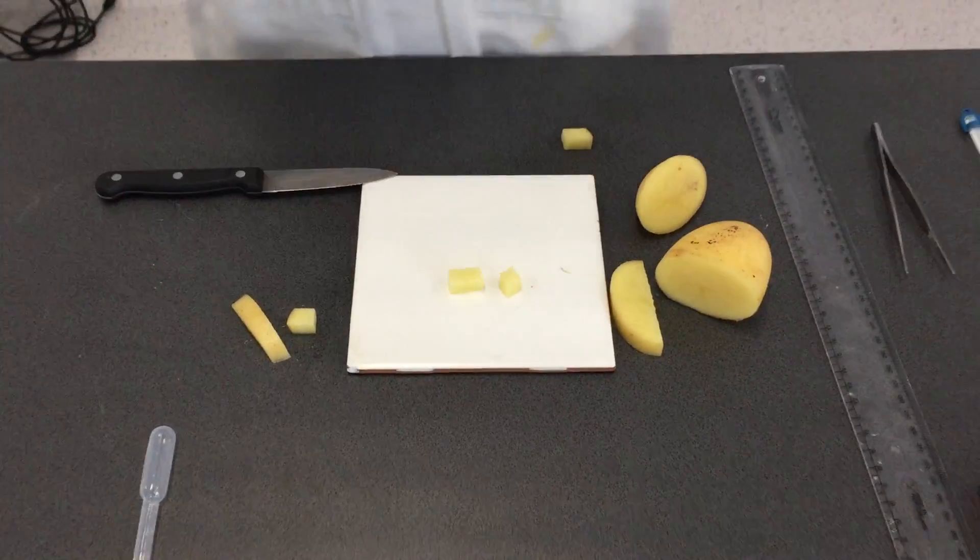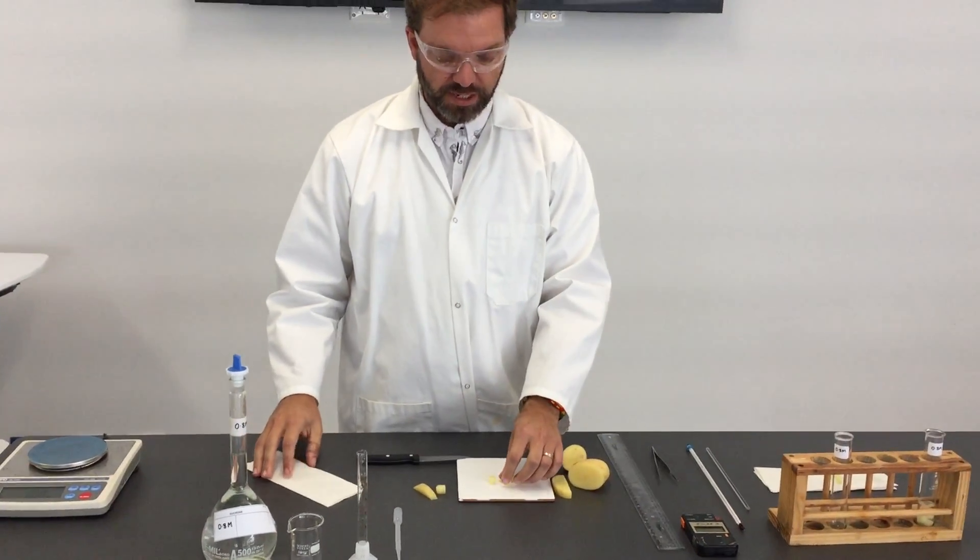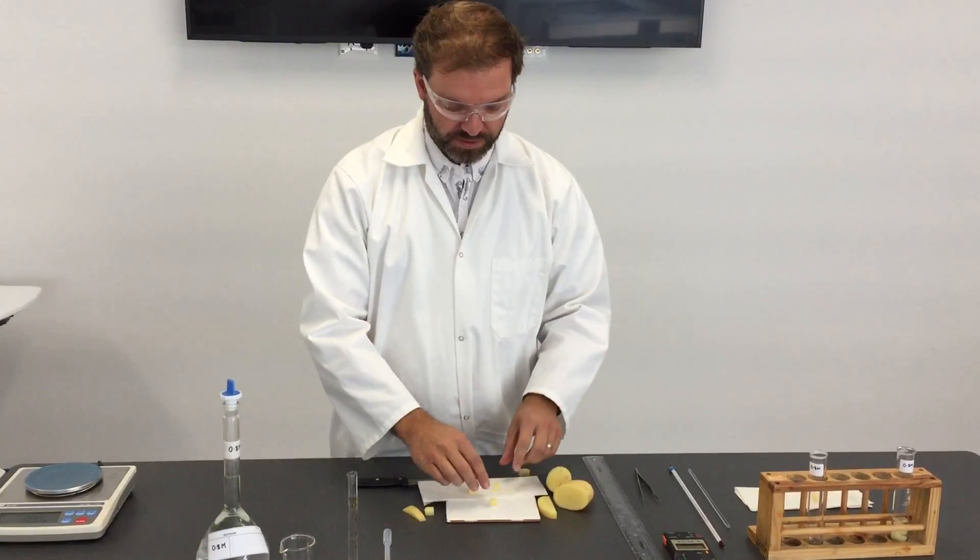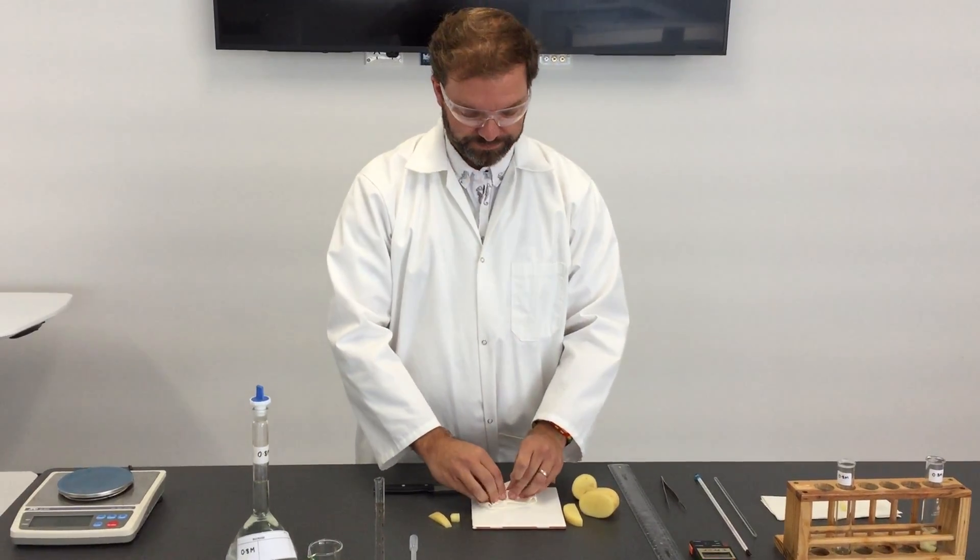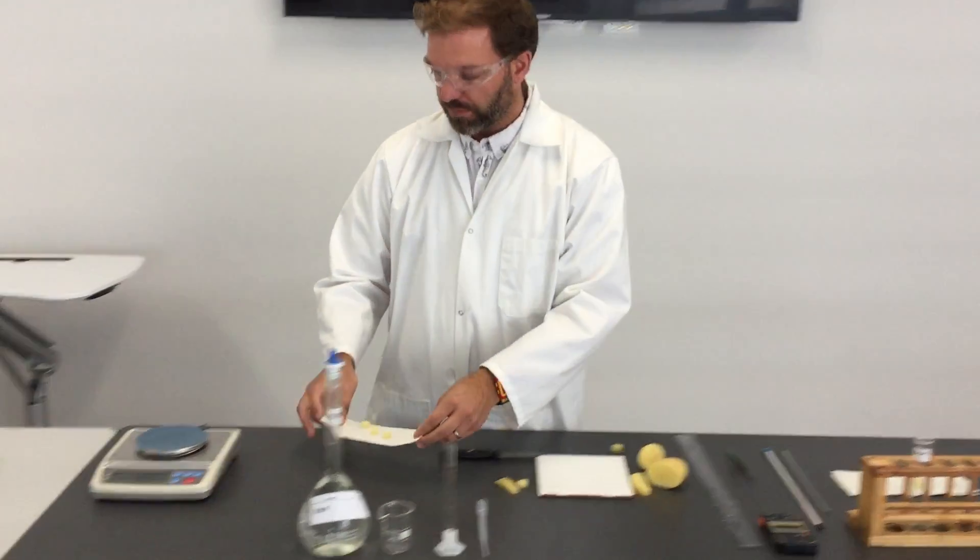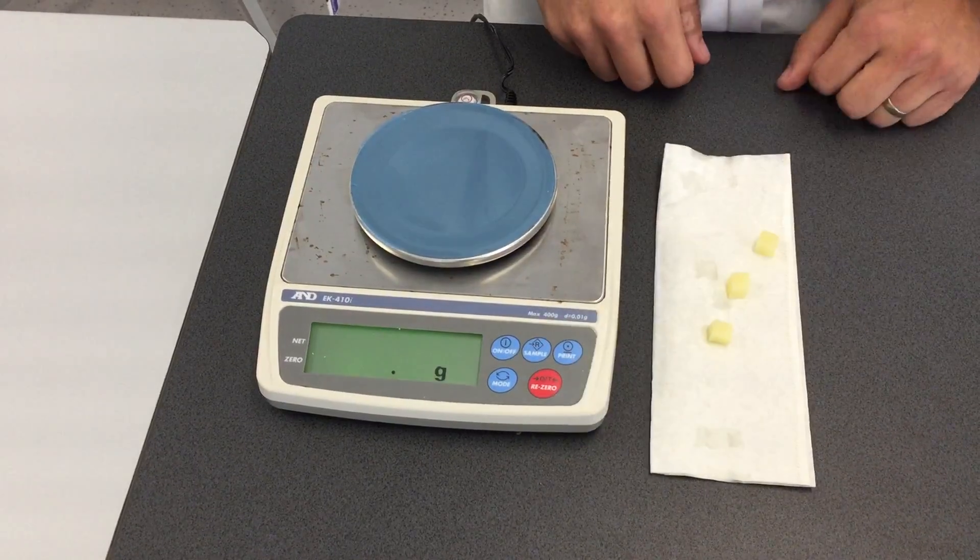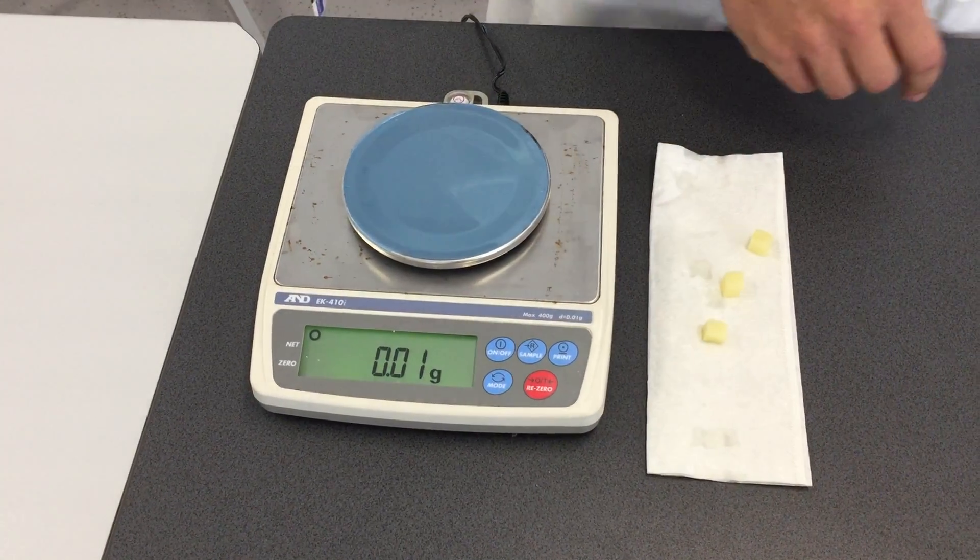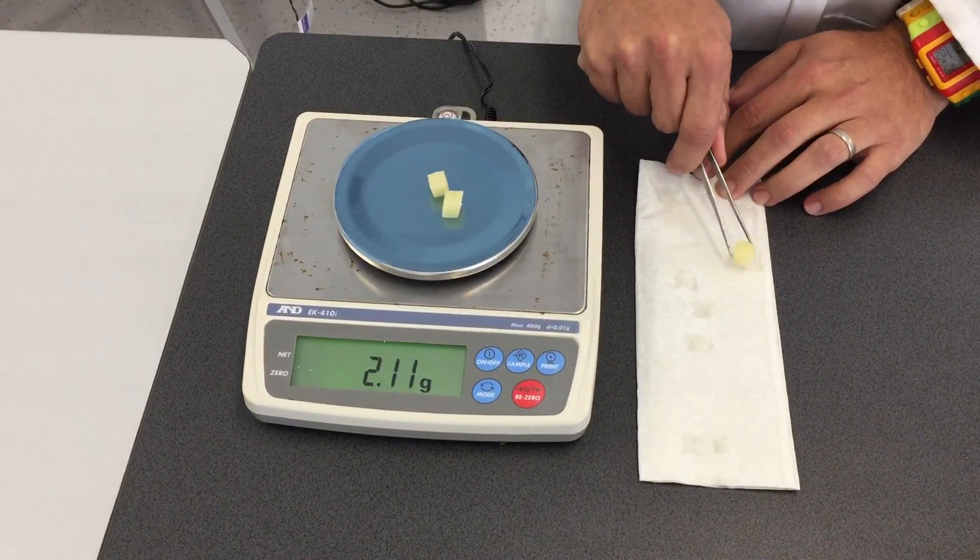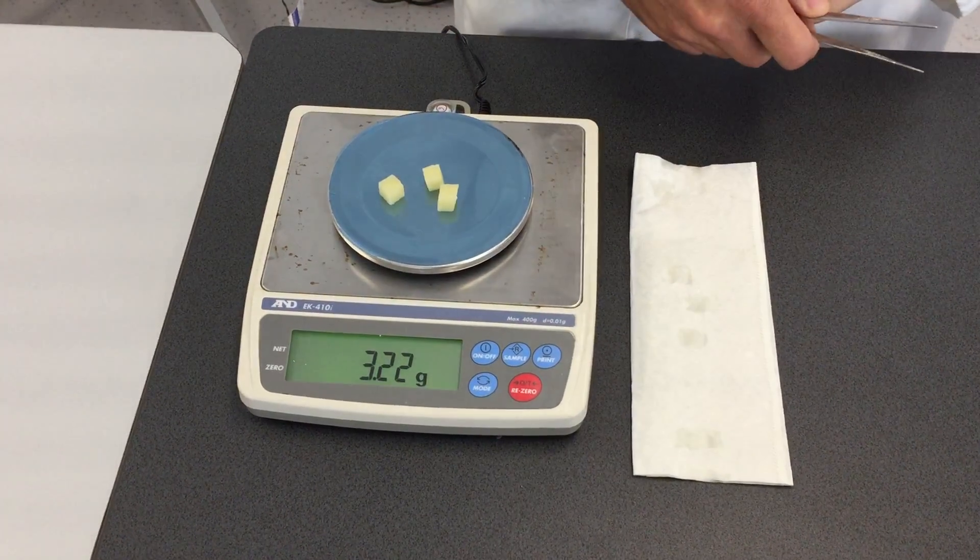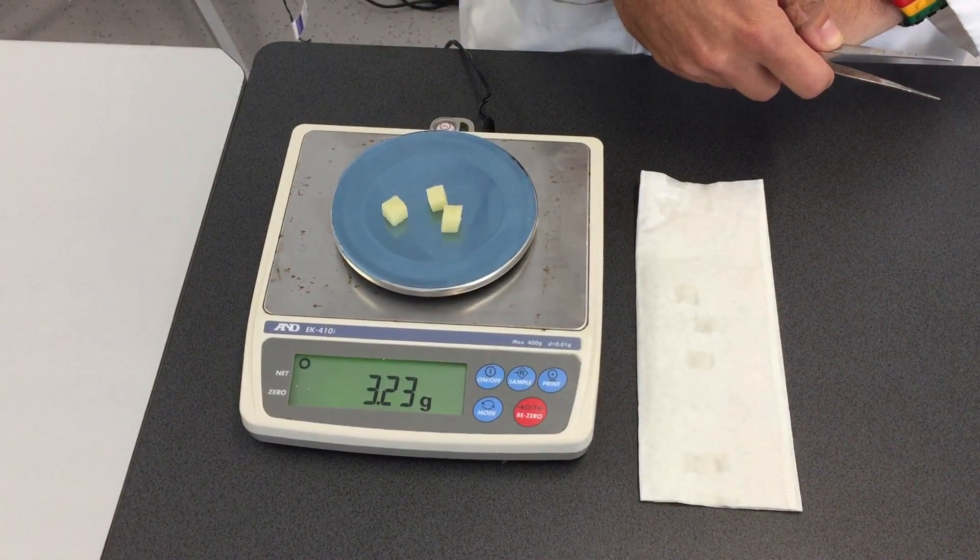Because we're looking at the change in mass in these, we need to weigh them first. But we want to make sure that the outside is dry, so the wetness on the outside doesn't add to the mass. We'll just pat them dry. And then on the scale here, checking that it's been zeroed, we can then place those pieces on there. Wait for that to settle and then record the mass: 3.2223 grams.